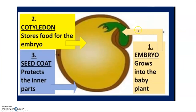First part of the seed: the embryo grows into the baby plant. Second part: the cotyledon stores food for the embryo. This part is also called food storage. Third: the seed coat protects the inner part.